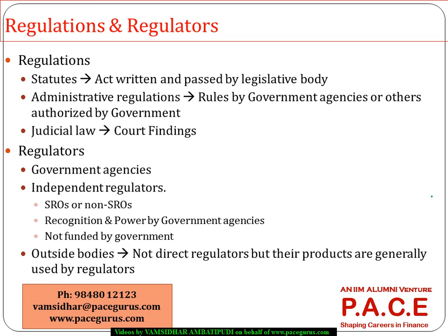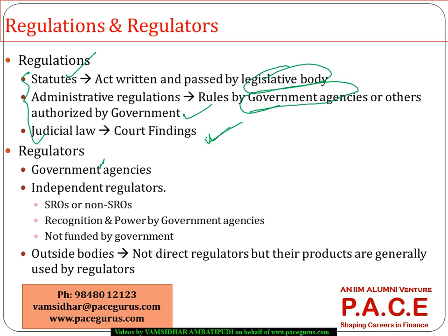Whenever we use the word regulation, we classify it into three major aspects. Regulations could be in the form of statutes, which are acts prepared by the legislative body of the country. Then we have administrative regulations, which are rules set by either government agencies or independent bodies authorized by the government. Finally, we have judicial law regulations, where court findings come into play.